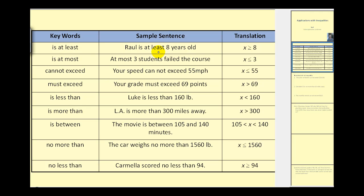Raul is at least eight years old. The key words 'at least' would translate into x is greater than or equal to eight. At most three students failed the course — that would translate into x less than or equal to three. Your speed cannot exceed 55 miles per hour, so x is less than or equal to 55. Your grade must exceed 69 points, meaning x must be greater than 69.